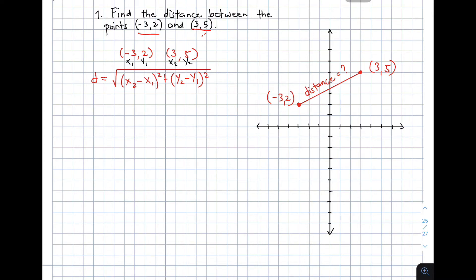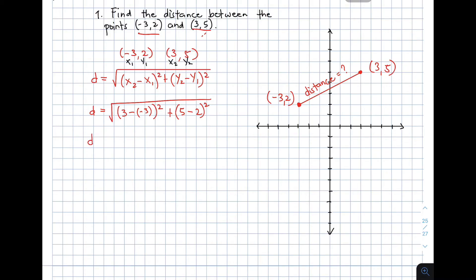Continue with our solution. We have your d is equal to the square root of x sub 2, which is 3, minus your x sub 1, which is negative 3 — so you have 3 minus negative 3 — squared, plus your y sub 2, which is 5, minus your y sub 1, which is 2, raised to 2. Be careful with the substitution, because it is important that your substitution method is done correctly.